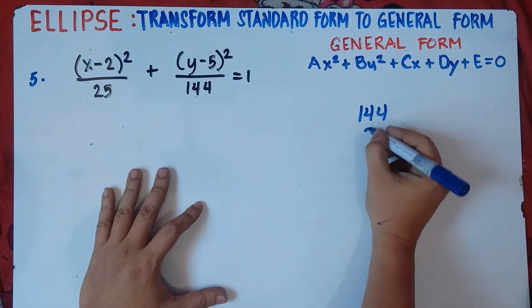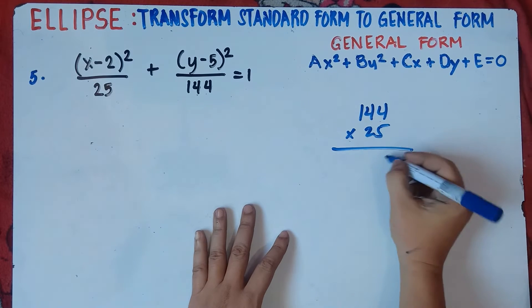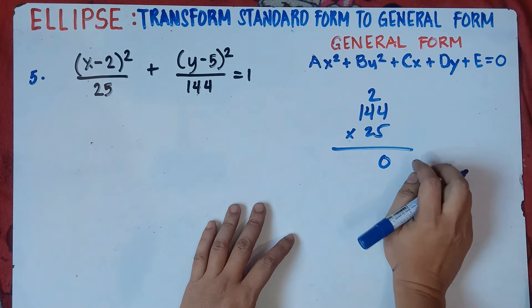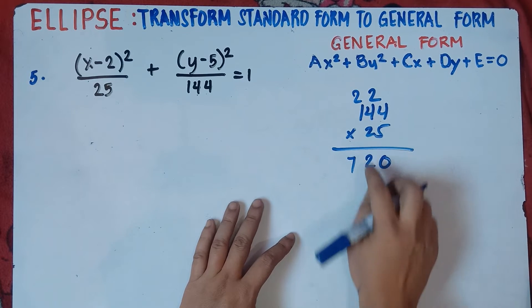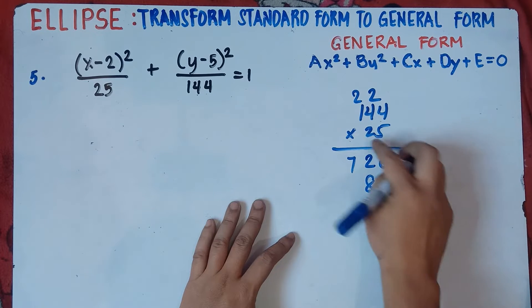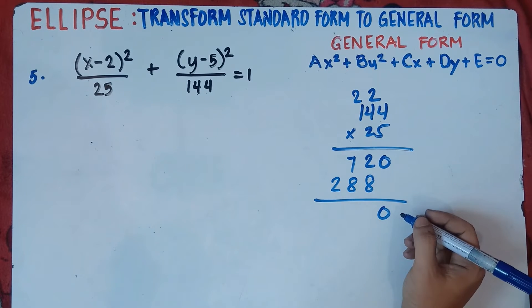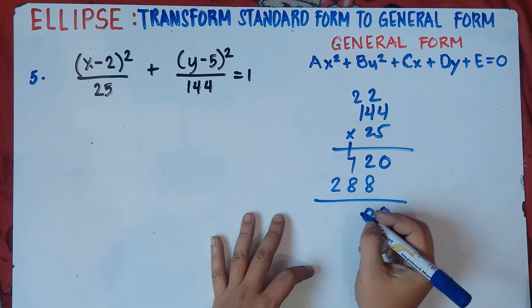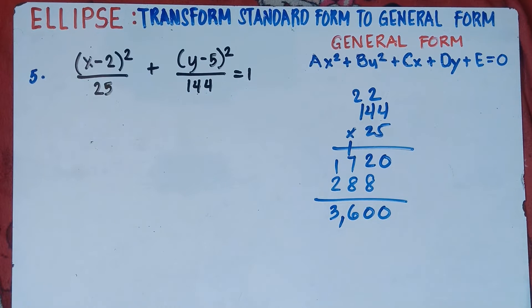Let's multiply 25 times 144. If the teacher allows you to use a calculator, that would be great. Let's do it manually: 5 times 4 is 20, carry 2; 5 times 4 is 20 plus 2 is 22, carry 2; 5 times 1 is 5 plus 2 is 7. Then 2 times 4 is 8; 2 times 4 is 8; 2 times 1 is 2, add a zero. Adding: 8 plus 2 is 10, carry 1; 1 plus 7 is 8 plus 8 is 16, carry 1; 1 plus 2 is 3. So 25 times 144 equals 3,600.